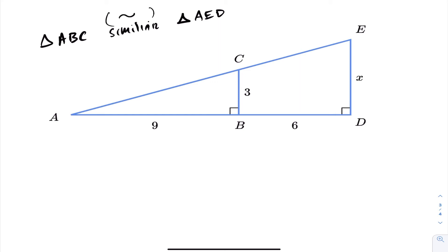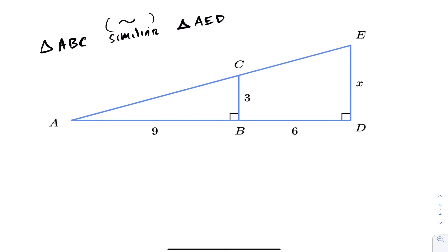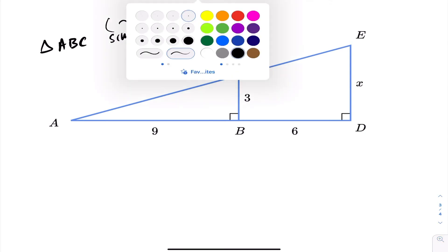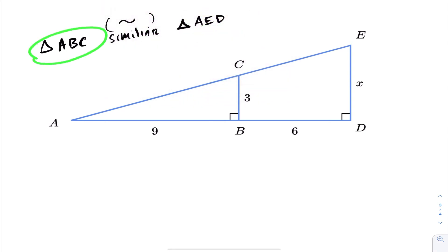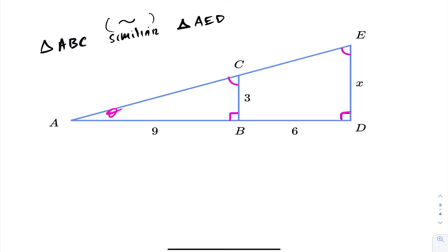For these triangles to be similar, either the ratio of corresponding sides are the same or corresponding angles are equal. Since we don't have the measure of all the sides — that's what we want to find — we'll prove the angles are equal. Right away, triangle ABC and triangle AED share a common angle theta. That's one angle that's the same. Also, they both have right angles. Therefore, the final angle — whether angle C or angle E — must also be the same. Because corresponding angles are the same, the two triangles are similar.